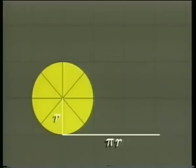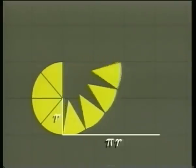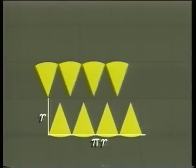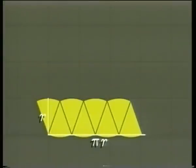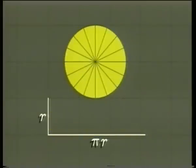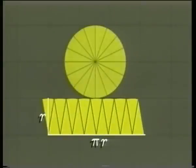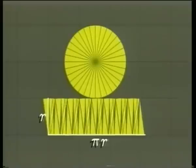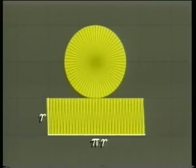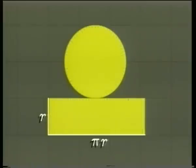the disk into an even number of equal slices and rearrange them to form a sort of parallelogram with the same area as the disk. As we take more and more slices, making them thinner and thinner, the parallelogram becomes more and more like a rectangle with base πr and altitude r, and the area is πr².